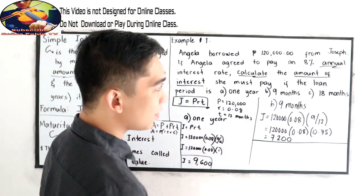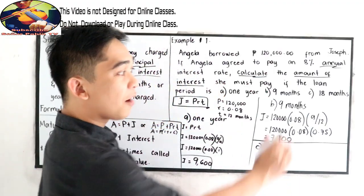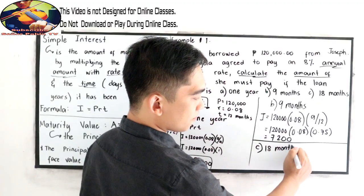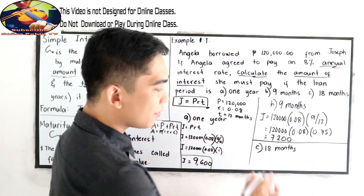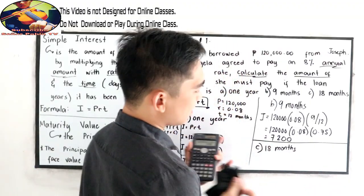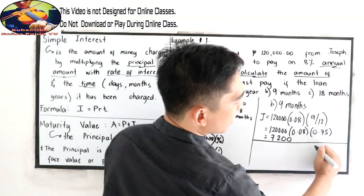And now, letter C. After 18 months. 18 months. So we have the interest. So 18 months.